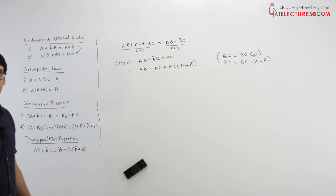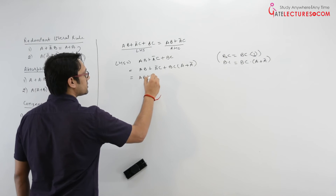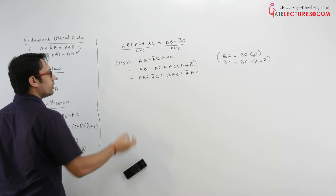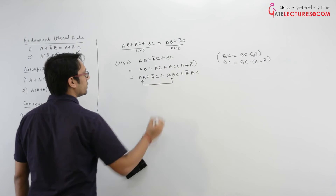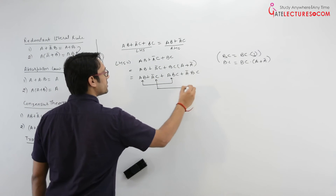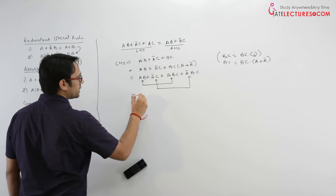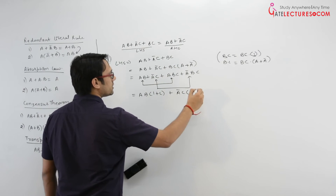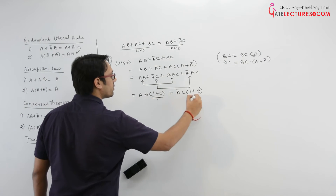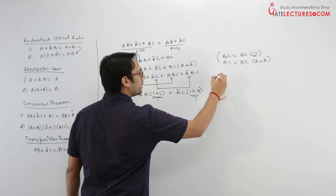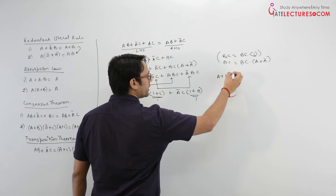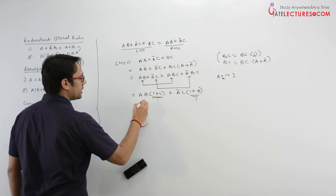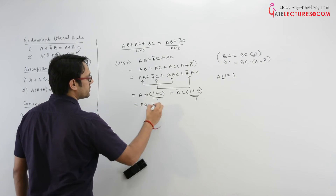So we can write it as AB plus A complement C plus ABC plus A complement BC. Between the first and third terms, take AB as common; between the second and fourth, take A complement C as common. It becomes AB times 1 plus C, plus A complement C times 1 plus B. Since any expression OR 1 equals 1, this simplifies to AB plus A complement C.